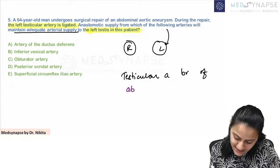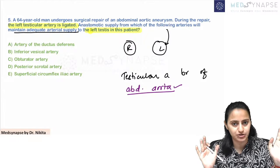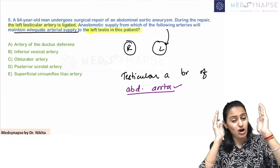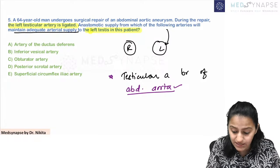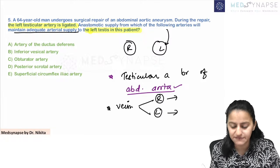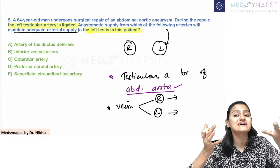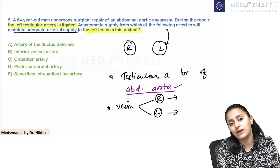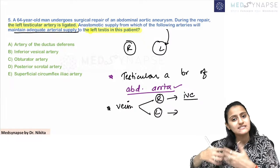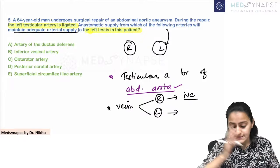The testicular artery comes directly from the abdominal aorta — not from the internal iliac artery. The gonadal arteries (testicular and ovarian) come directly from the aorta. Now, the testicular vein is where the difference between right and left comes in. Both testicular arteries (right and left) come from the aorta. But for drainage: the right testicular vein drains into the IVC (IVC is on the right side), and the left testicular vein drains into the left renal vein.